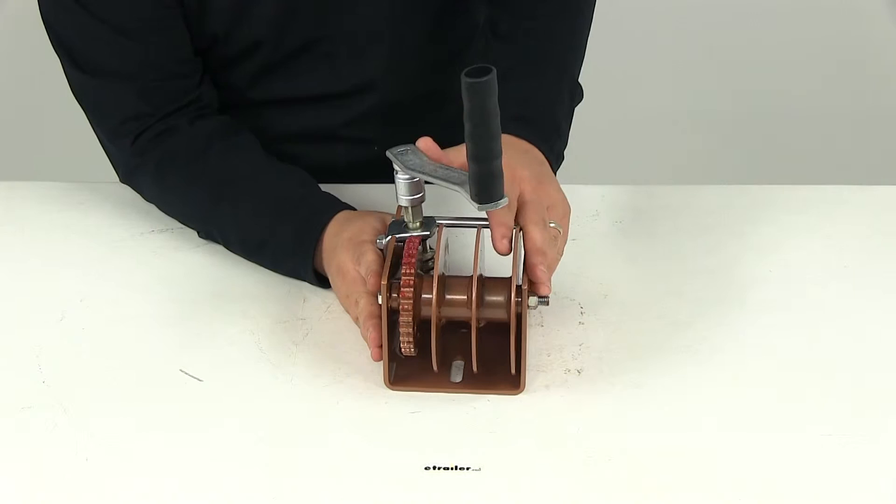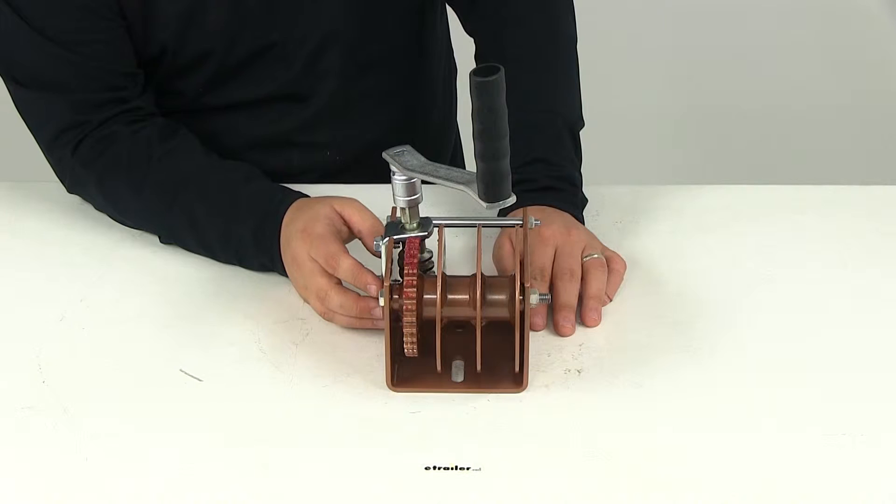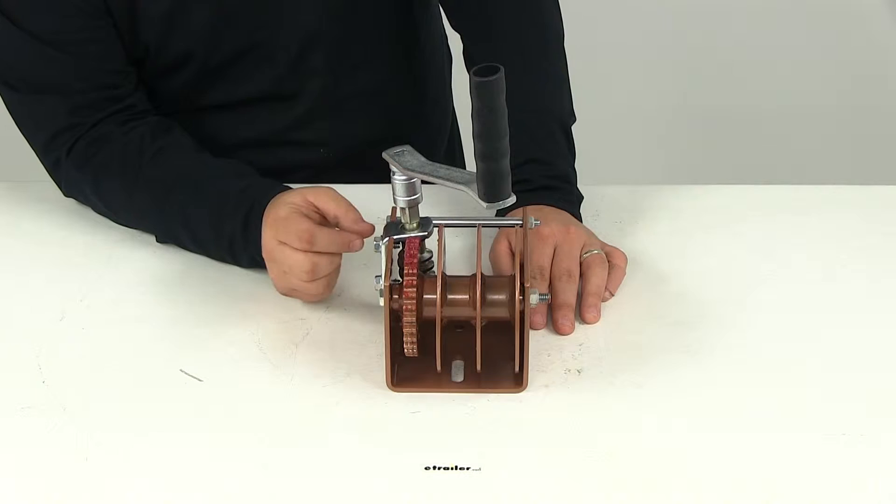The drum hub diameter on this unit is going to measure an inch and a half. When it comes to the drum storage, if you're going to use a quarter inch cable you're going to have up to 43 feet in length which is going to give you 21 and a half feet per side.